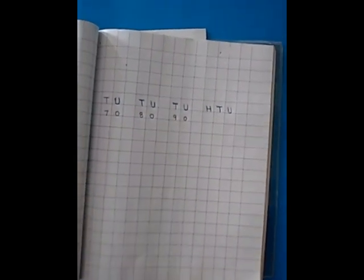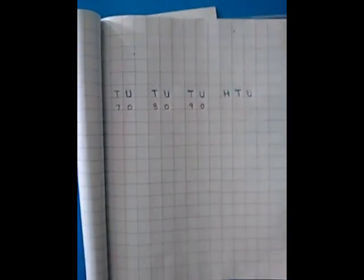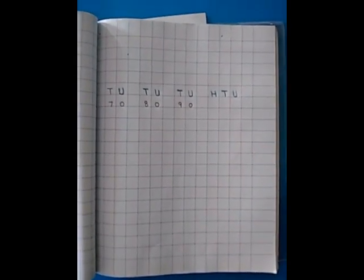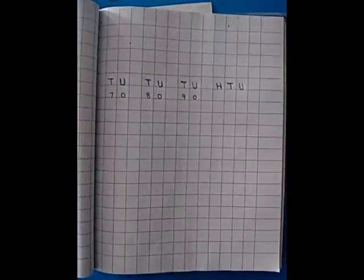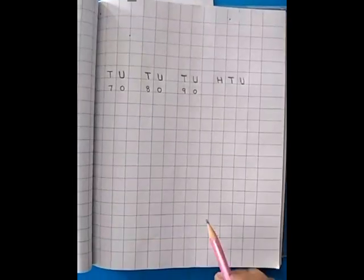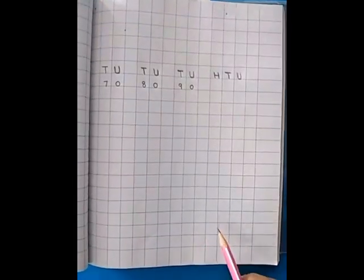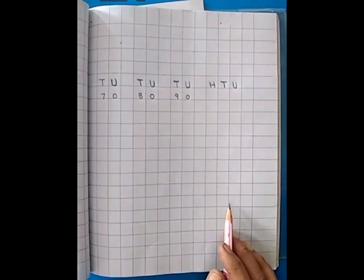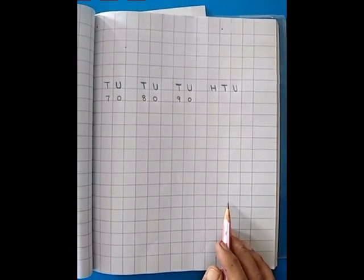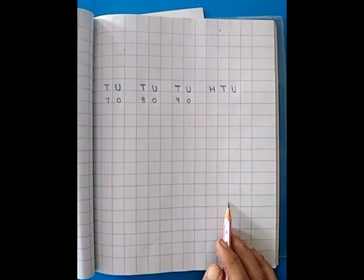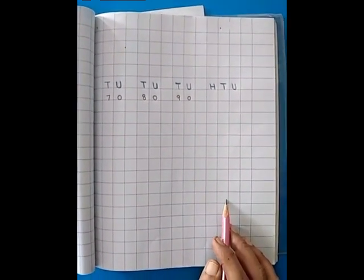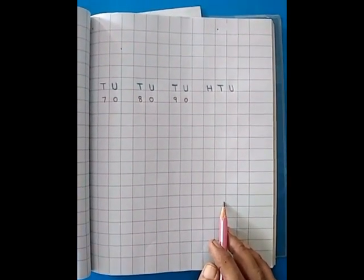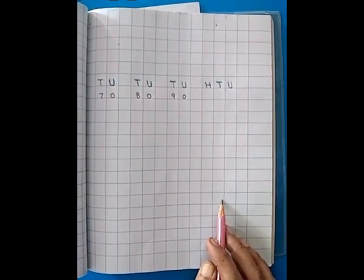Assalamualaikum children. Now we have done number writing before also. This is your mathematics notebook. And now we are doing some more number writing. We have done from 1 till 69 in our previous pages.